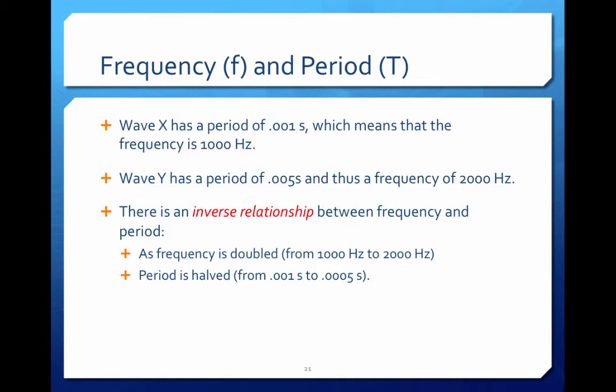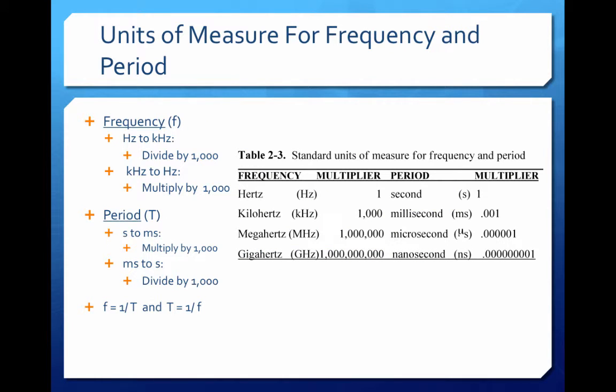There is an inverse relationship between frequency and period. As the frequency is doubled, the period is halved. So as the frequency is doubled from 1,000 to 2,000 hertz, it takes less time to complete one cycle of vibration. Frequency can be measured in hertz or kilohertz and period can be measured in seconds or milliseconds. Remember there is a reciprocal relationship: frequency equals one over the period and period equals one over the frequency.